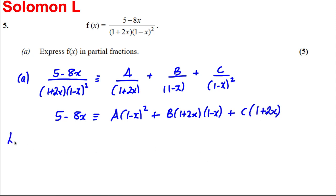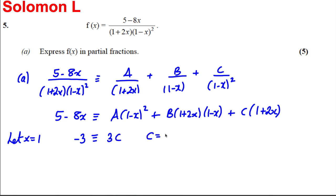We let x = 1 so that the A and B terms disappear. On the left we get -3, which is identical to 3c. So c = -1.